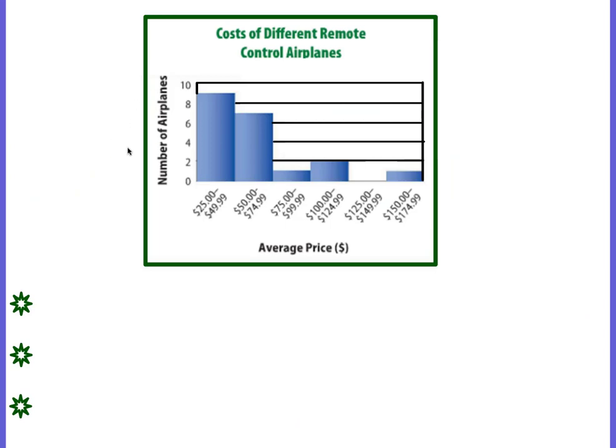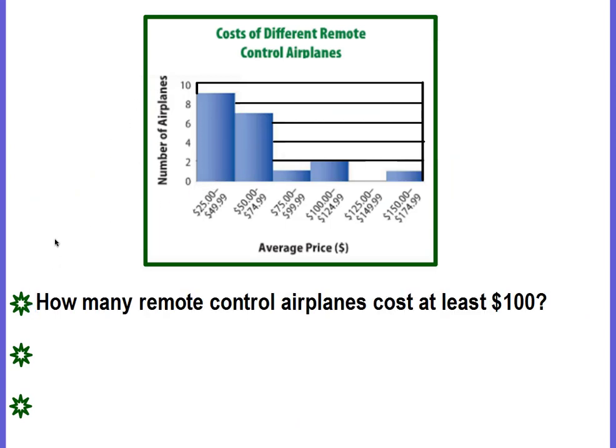Okay, so with a histogram, you can also answer other questions. How many remote control airplanes cost at least $100? Well, at least $100, think about your inequalities. It means that it could be greater than or equal to $100.